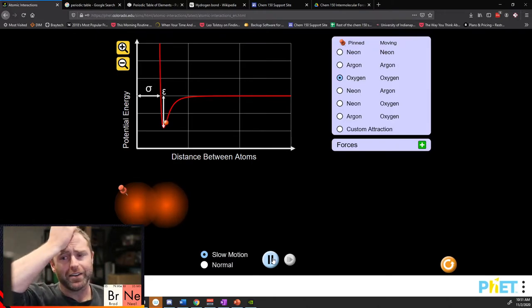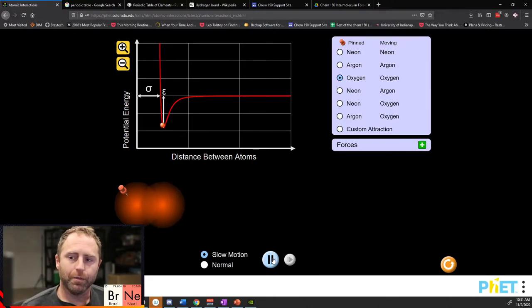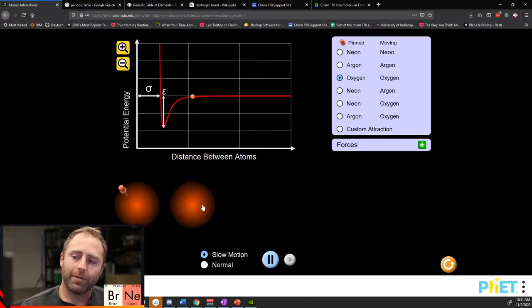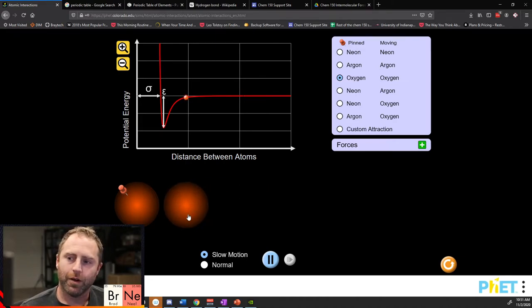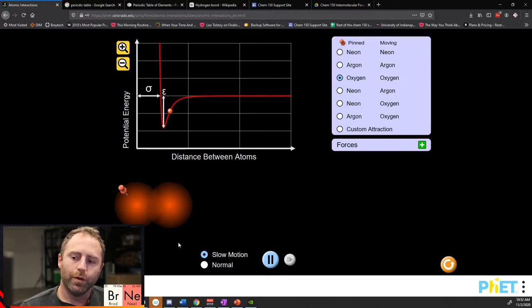So when you're looking at that energy diagram that was there in the book, that's what it's trying to tell you. You get the atoms too close to one another the potential energy gets too high, you get them too far apart, like we grab this thing and it goes way out here, the atoms don't have any energy or they can't interact with one another.